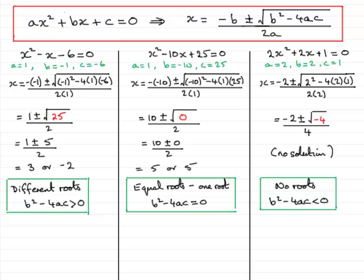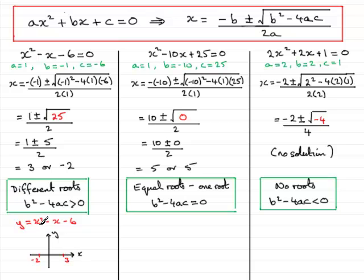What does this mean from a graphical point of view? If we were to draw the graph of y equals x squared minus x minus 6, and sketch our axes, we've got two different roots — these are the values that make the equation equal to 0, the values that make y equal to 0. That means the graph would cross the x-axis in two places, at 3 and minus 2. So we've got a u-shaped curve, and our graph intersects the x-axis in two places at the roots.